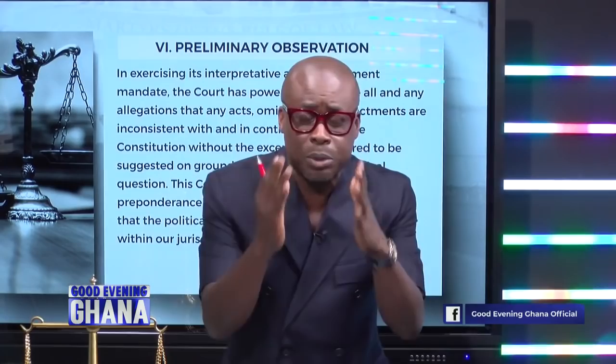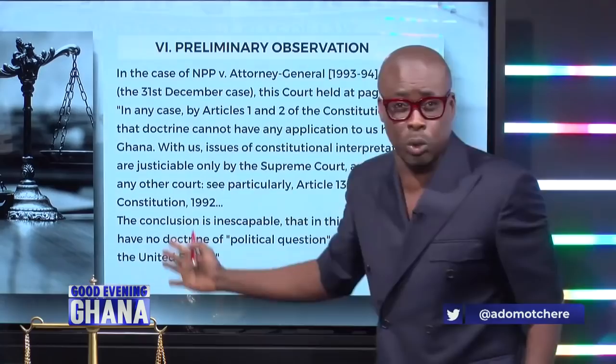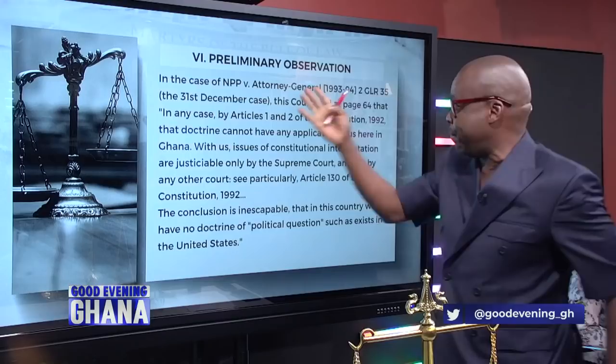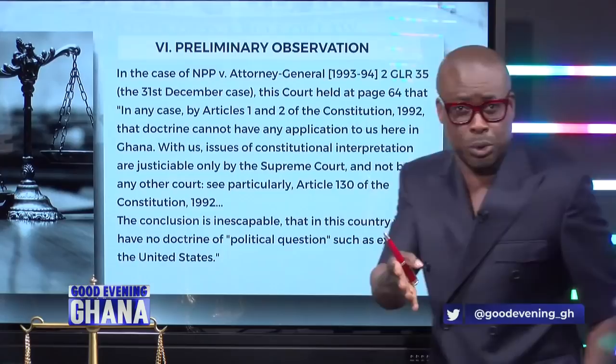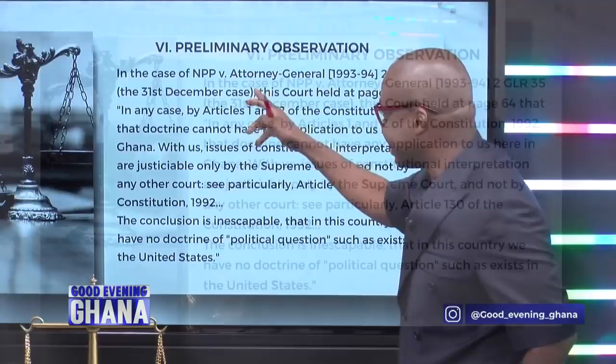In the case of NPP v. Attorney General — the 31st December holiday case — this court held that by Articles 1 and 2 of the Constitution 1992, the political question doctrine cannot have any application here in Ghana. Justice Kulendi lists this and other cases to justify the predominant, preponderant, long-held view of the Supreme Court that constitutional interpretation questions are always justiciable.